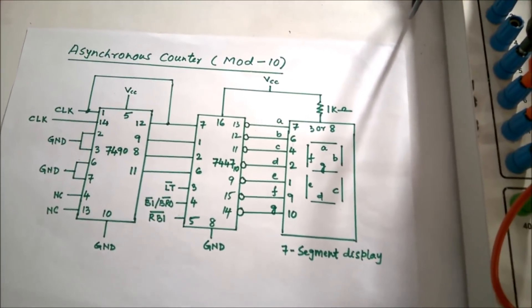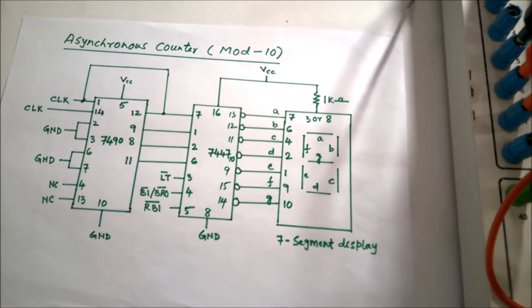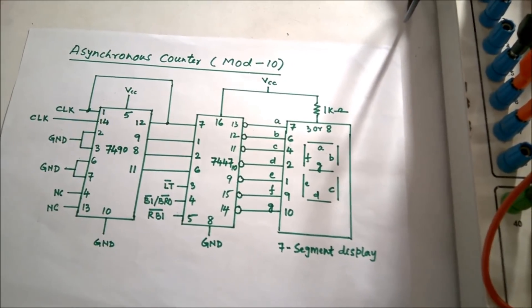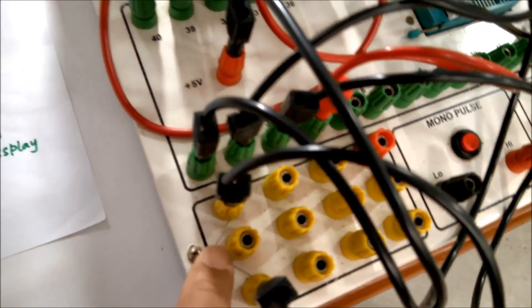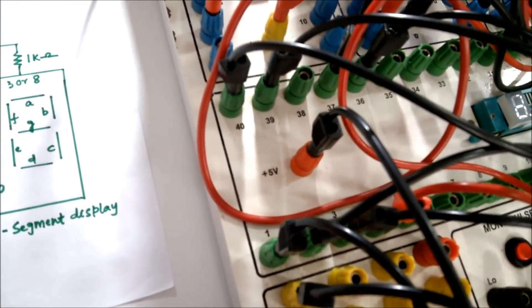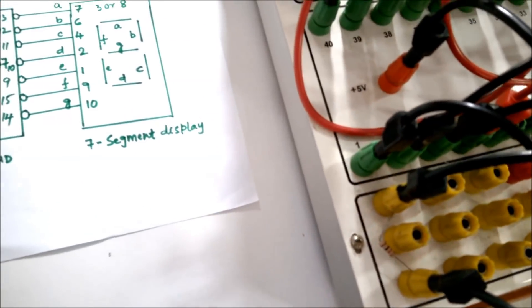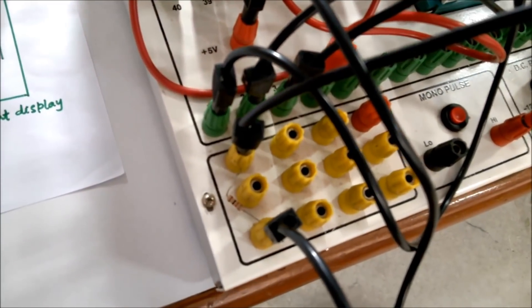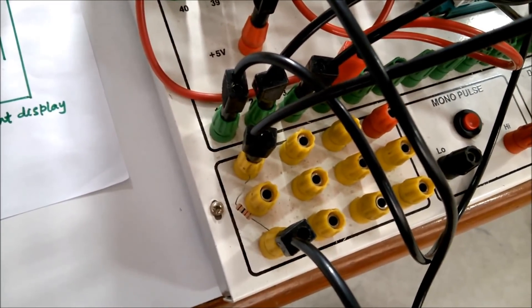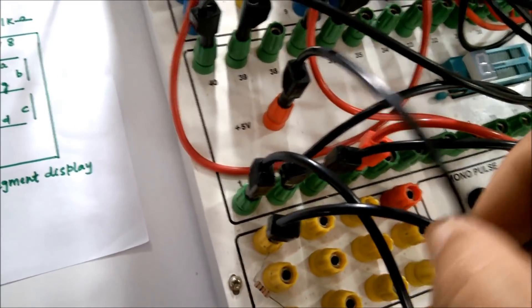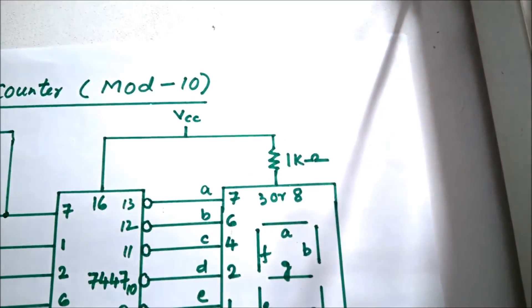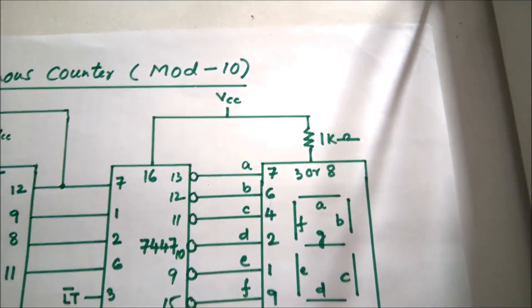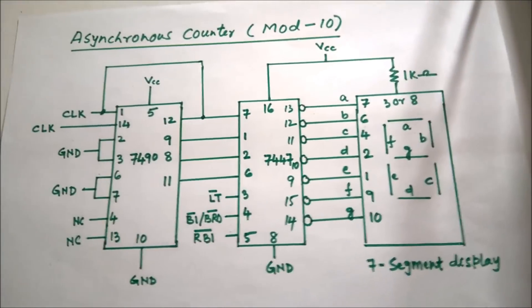One important note: pin 3 of the 7-segment display is connected to a 1k ohm resistor, with the other end of the resistor connected to VCC (5 volts), as shown in the circuit diagram. With all connections complete, we can now observe the output.